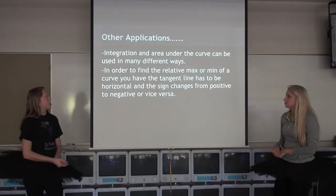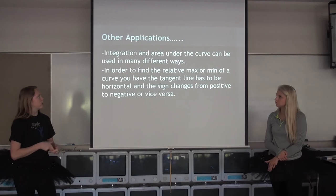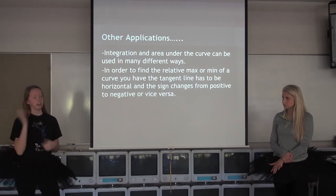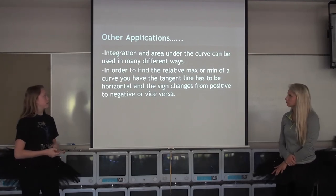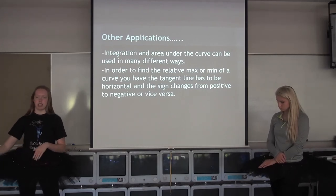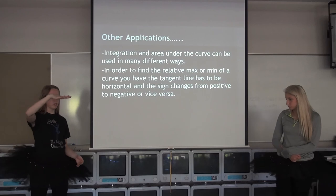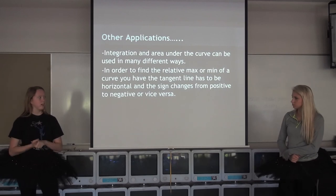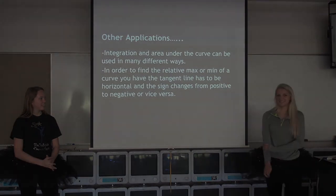Some other applications: integration and the area under the curve can be used to find the area under a kick, a leap, or all different sorts of dance moves. In order to find the relative max or min, the tangent line has to be horizontal and the sign changes. As the dancer leaps, she's increasing — positive. Then at her peak she's flat, and when she starts to come down it's negative. All right, that's it. Thank you.